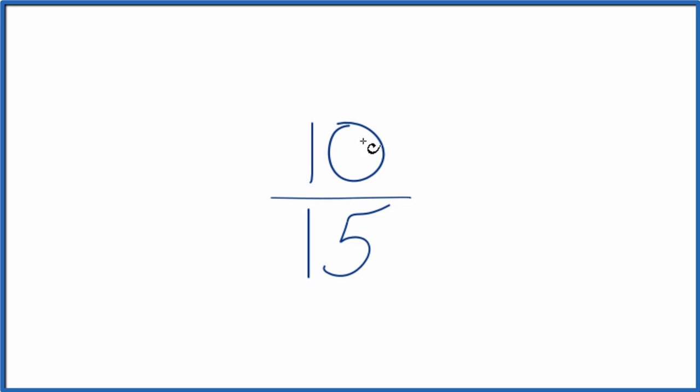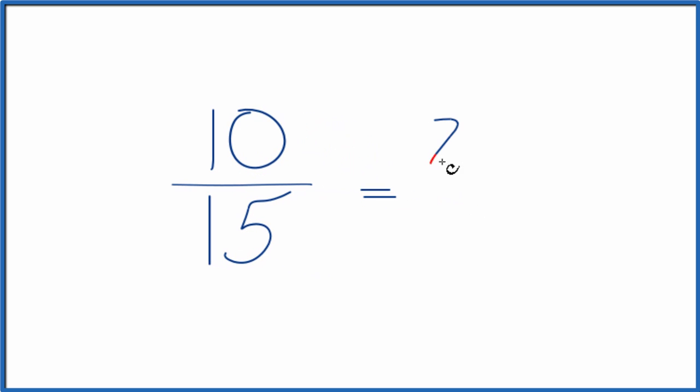So we could simplify 10 fifteenths, because 10 divided by 5 is 2, 15 divided by 5 is 3. So two-thirds, that's an equivalent fraction for 10 fifteenths. Divide 10 by 15, or 2 by 3, you get the same decimal answer.